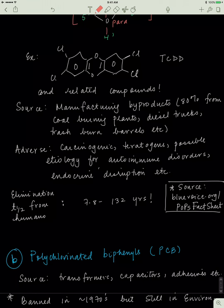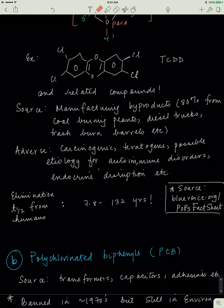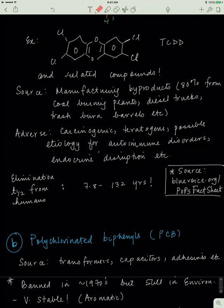Now let's look at an example of dioxin, TCDD, tetrachlorodibenzodioxin. As we can see, we have that dioxin ring which is the building block, then we have the two benzene rings, and then we have chlorine atoms at various positions.